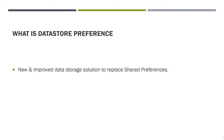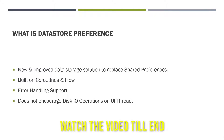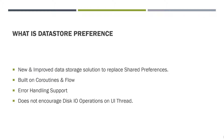Now let's see what DataStore Preference is and why we should use it. DataStore Preference is a new and improved storage solution to replace shared preference. It is built on coroutines and Flow. If you don't know what coroutines and Flow are in Kotlin, comment below and I will make a tutorial on it. DataStore Preference has an error handling mechanism and it does not perform tasks on the UI thread — these are the main advantages of DataStore Preference on Android.